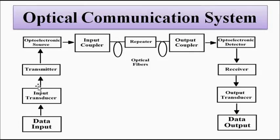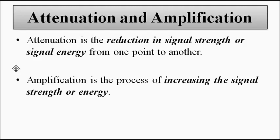This is the basic block diagram of the optical communication system. Attenuation is the reduction in signal strength or signal energy as the signal travels from one point to the other. It is not just for optical communication — for any communication system, any type of attenuation happens, meaning a reduction in signal strength.